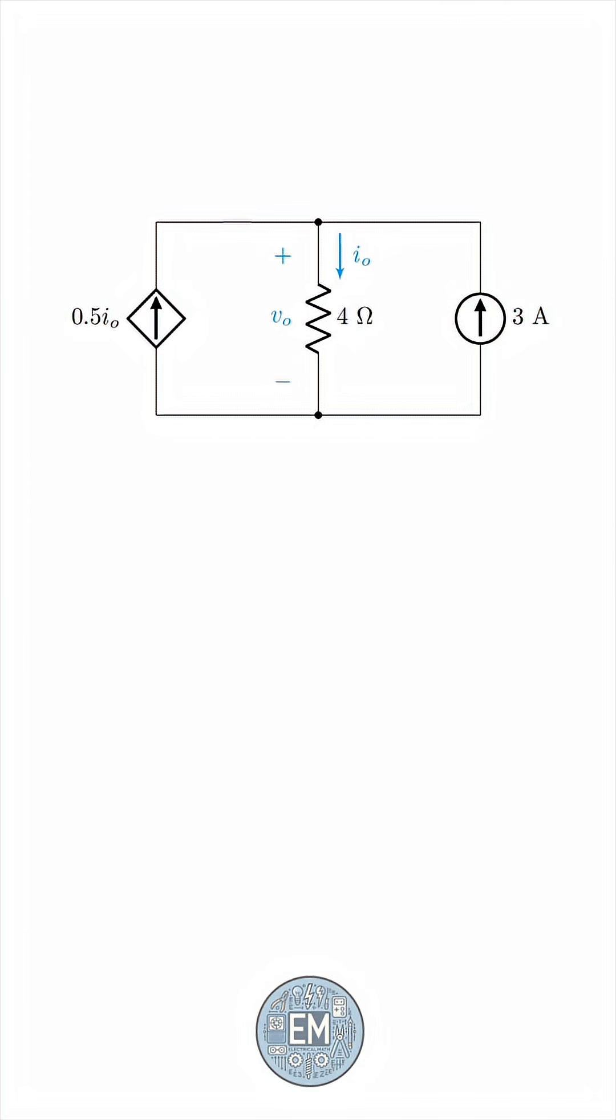We know by Ohm's law that VO must be equal to R, 4 ohms in this case, times IO. This is a single equation in two unknowns.